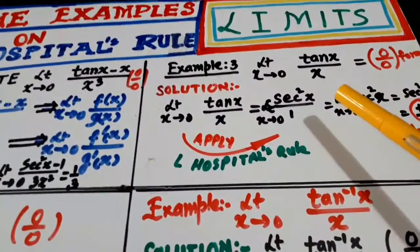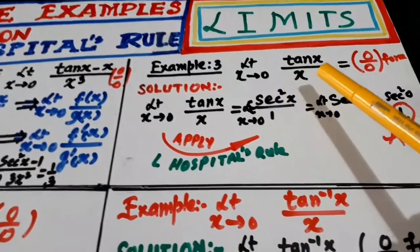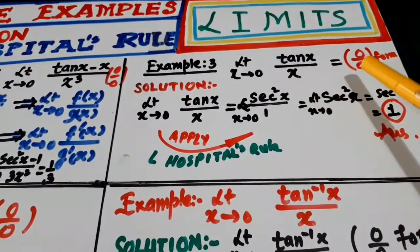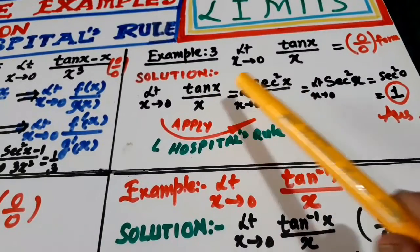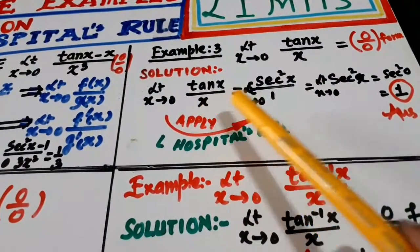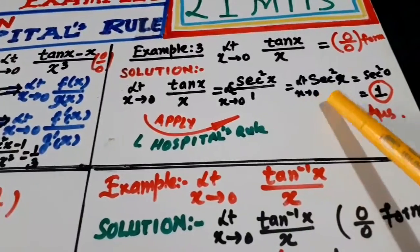Now let us go to the third one. Limit x goes to 0, tangent x over x. It is of the shape 0 by 0. Take the derivative. Derivative of tangent x is secant square x. Derivative of x is 1. Put x equal to 0. You will get 1.